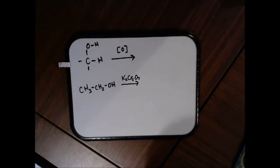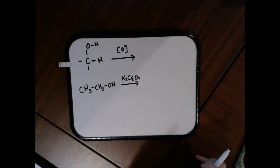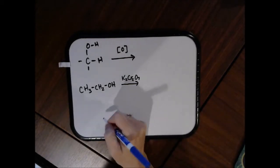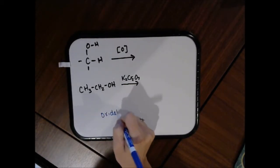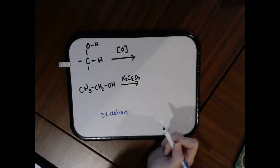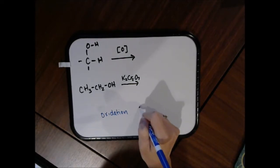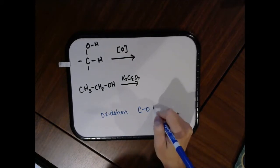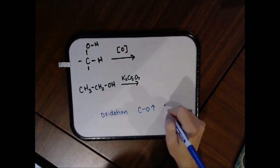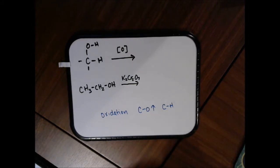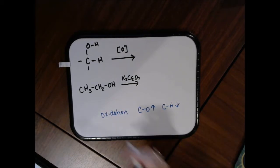We're going to review the oxidation of alcohols. Oxidation and reduction have lots of different definitions, but we're going to go with the simplest one. In an oxidation reaction, the number of carbon-oxygen bonds increases, or the number of carbon-hydrogen bonds decreases. If either or both of those are occurring in your reaction, you have an oxidation reaction.